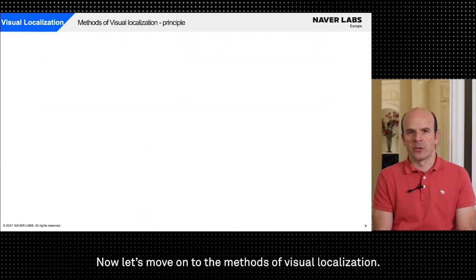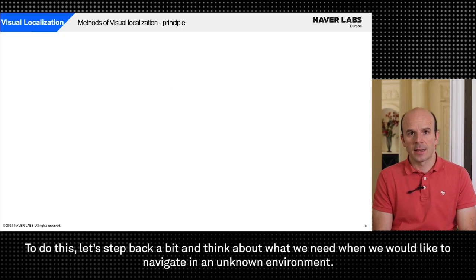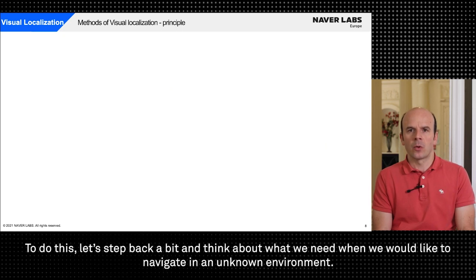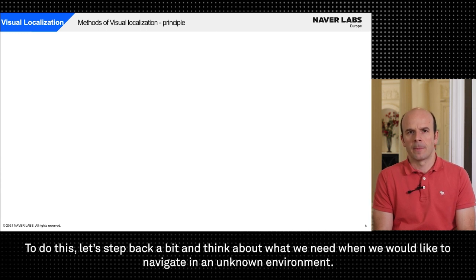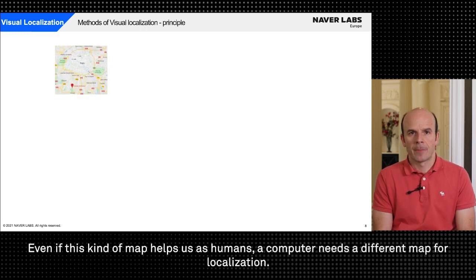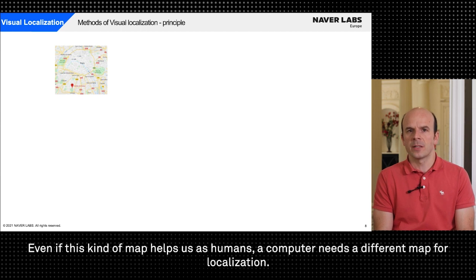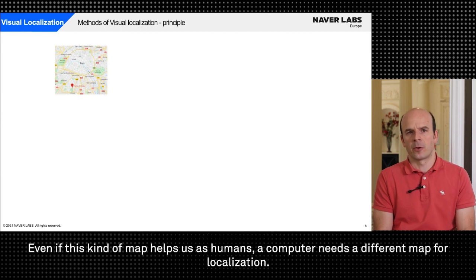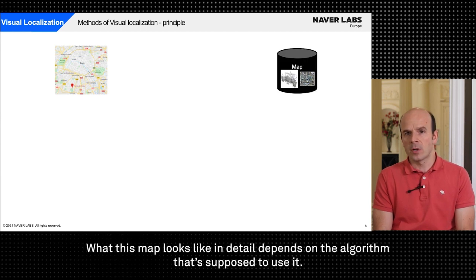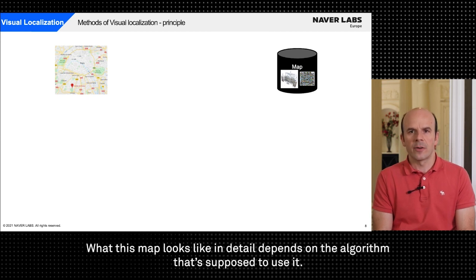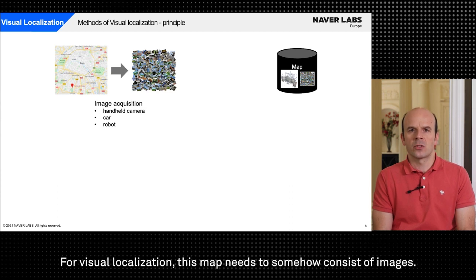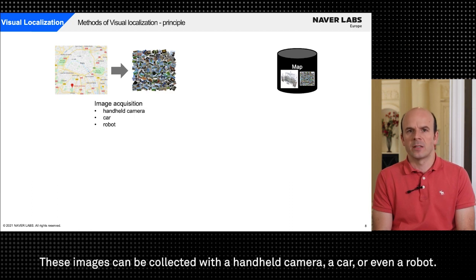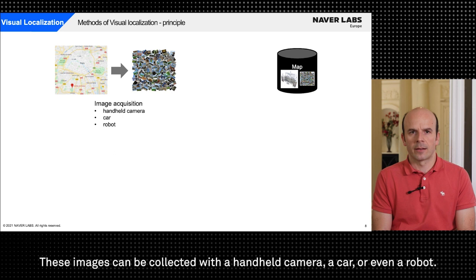Now let's move on to the methods of visual localization. To do this let's step back a bit and think about what we need when we would like to navigate in an unknown environment. Usually we need a map. Even this kind of map helps us humans. A computer needs a different map for localization. What this map looks like in detail depends on the algorithm that's supposed to use it. For visual localization this map needs to somehow consist of images. These images can be collected with a handheld camera, a car or even a robot.